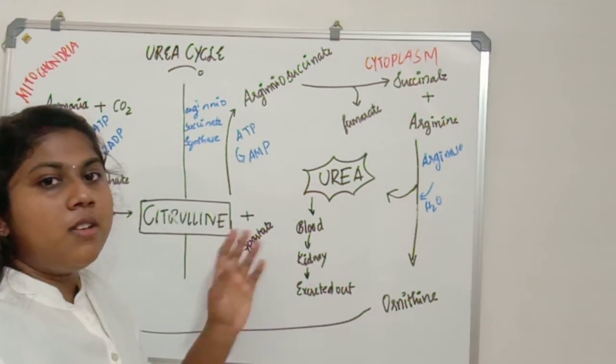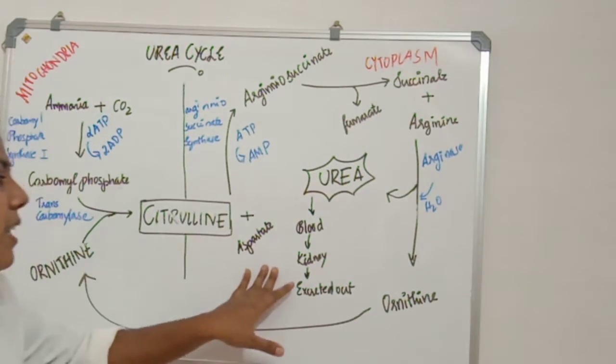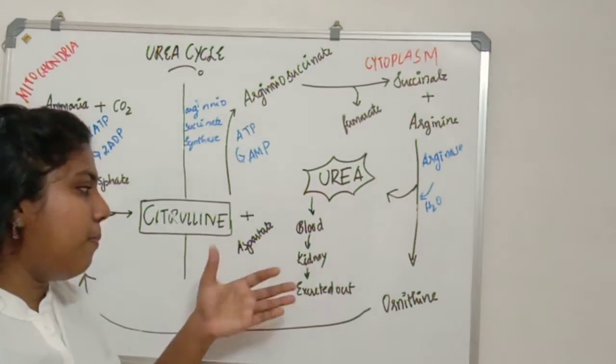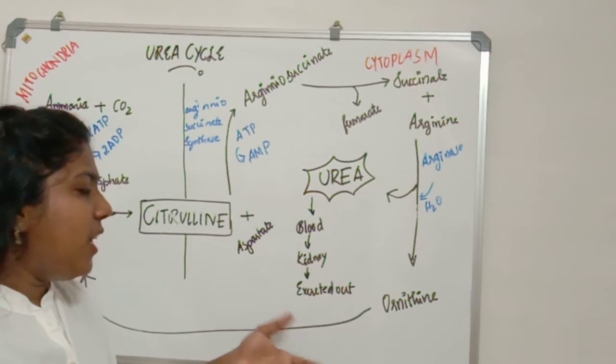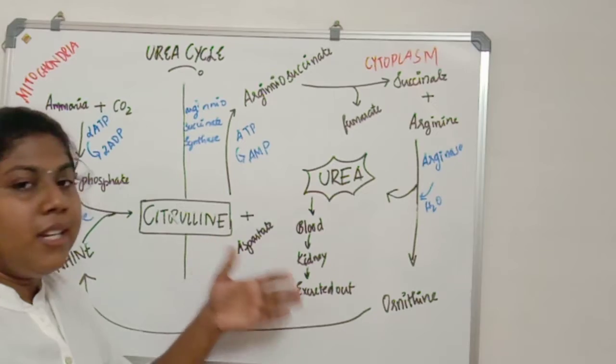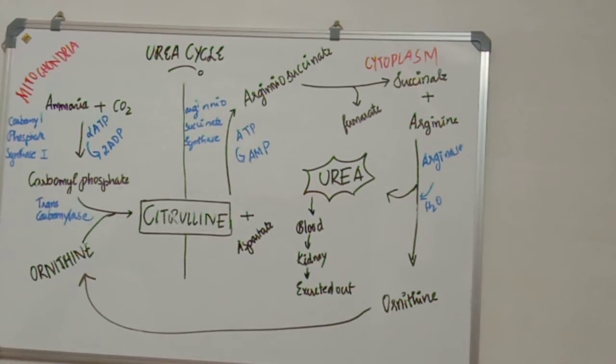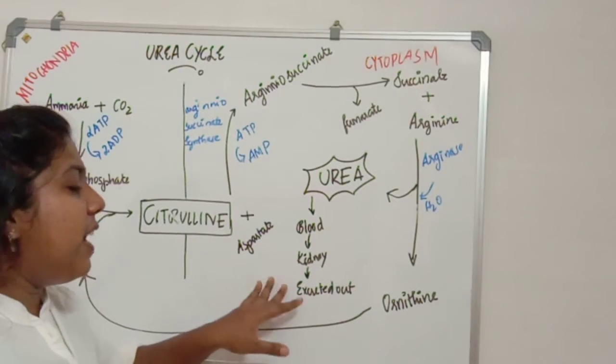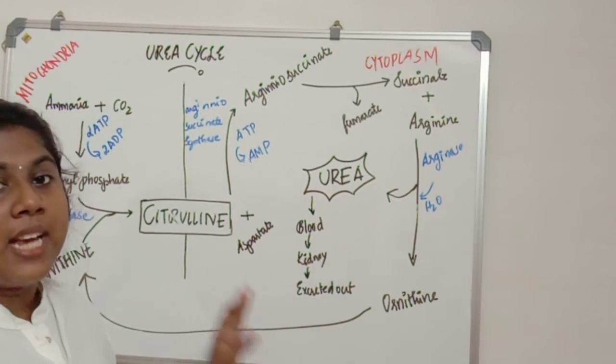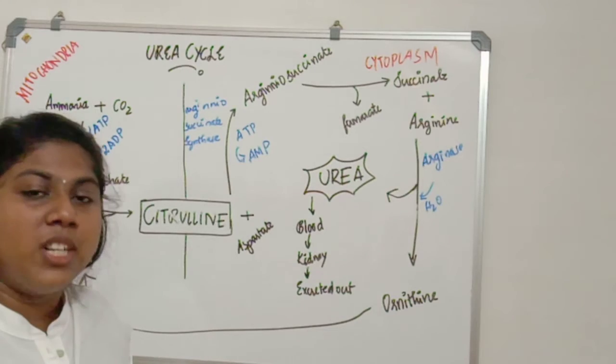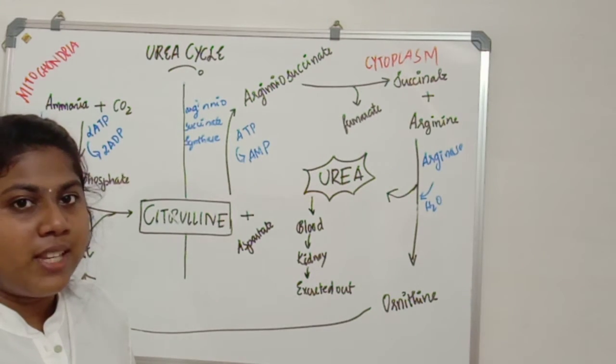And then, of course, various reabsorption processes. It means excess water can be reused for our body needs. Various types of filtration happen here. And finally, this urea is excreted out in the form of water-soluble, less toxic material.